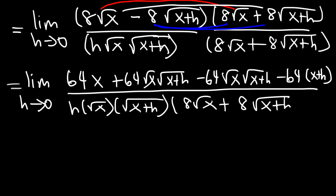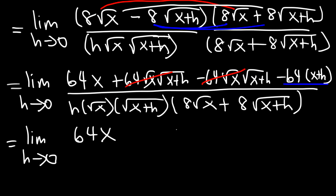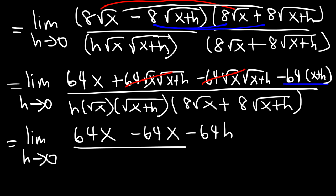Now this is a very long problem, but if you have a problem like this on a test, this is what you have to do. First we can cancel the two middle radical terms. Then let's distribute negative 64 to x plus h. So what we have now is 64x, and then negative 64x, and negative 64h, divided by everything on the bottom.